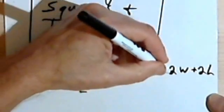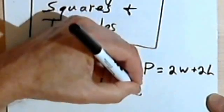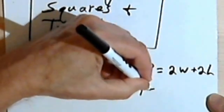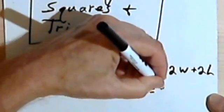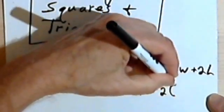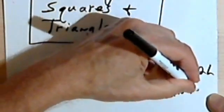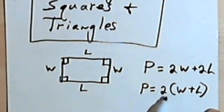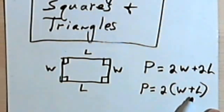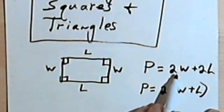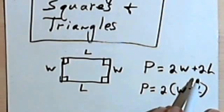And if you want to, you could also think of the perimeter as 2 times (w plus l), since if we distribute the 2 to the w and the l, we'll get right back to 2w plus 2l.